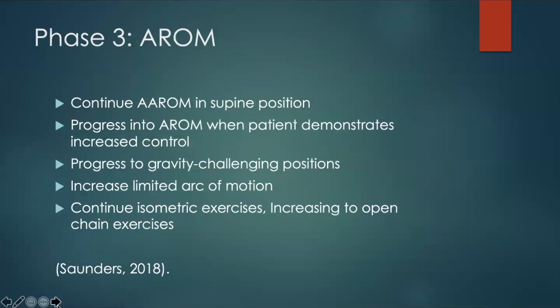This is the limited arc motion in the gravity-eliminated position for phase two. Phase three continues to build off phase two. This phase works to progress the client from completing active assisted range of motion exercises in supine and transitions them to actively completing range of motion exercises on their own. As the client demonstrates increased control and strength, they begin to move out of the supine position to side-lying and then eventually progress to gravity-challenging positions.